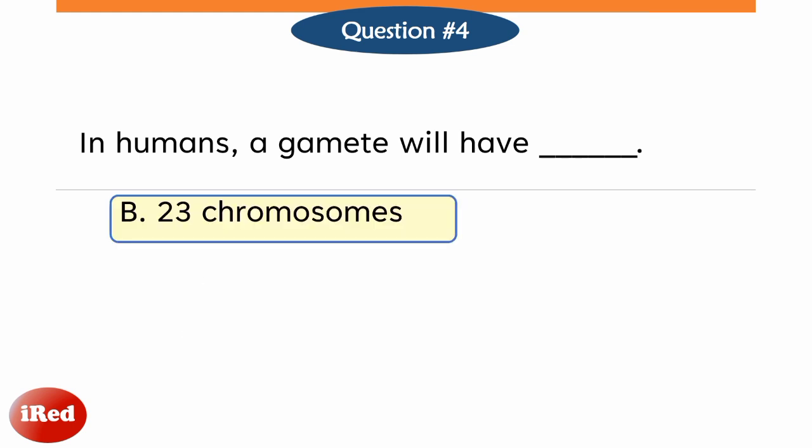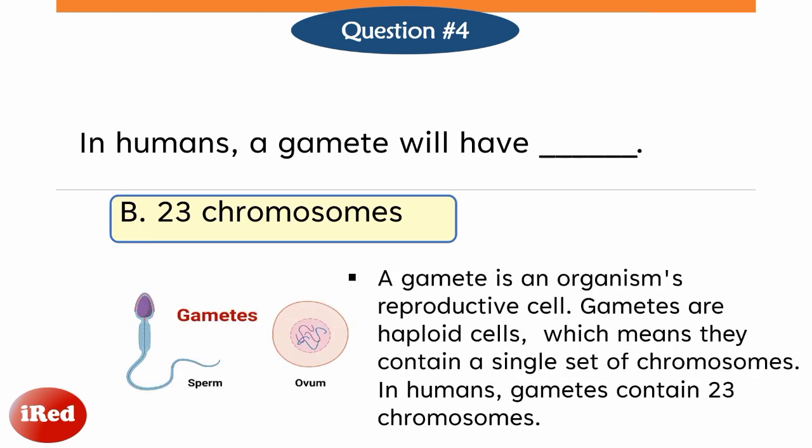The correct answer is letter B. A gamete is an organism's reproductive cell. Gametes are haploid cells, which means they contain a single set of chromosomes. In humans, gametes contain 23 chromosomes.